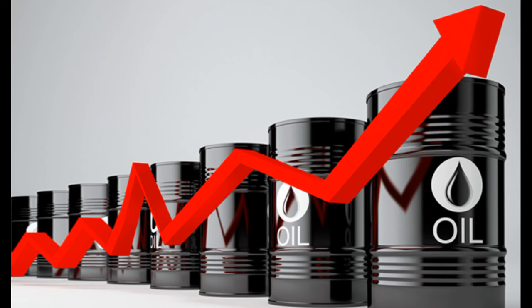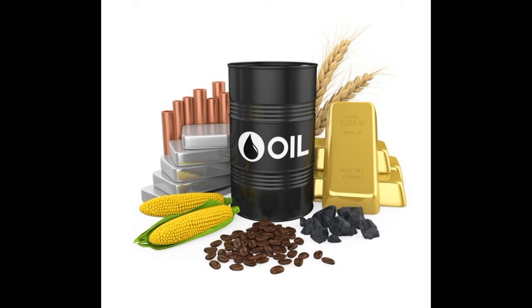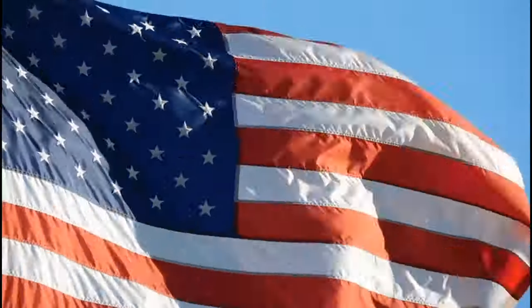Number 6: Impact on Commodities. The collapse of the USD would have profound implications for commodity markets. Commodities such as gold, oil, and agricultural products often have an inverse relationship with the strength of the USD. Consequently, a weakening or collapsing USD could lead to significant shifts in commodity prices. Gold and Precious Metals: traditionally considered a hedge against currency depreciation, gold and other precious metals could experience a surge in demand and prices. Investors often turn to these commodities as a store of value during times of economic uncertainty.